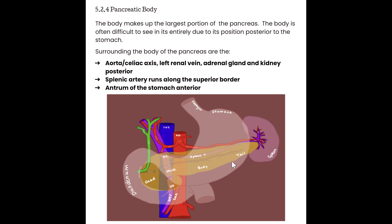Some other structures we'll see are the splenic artery running along the superior border of the body — it's a very tortuous vessel that runs on the superior side of the pancreas, coursing along the body, extending to the tail, and into the spleen. The antrum of the stomach is also going to be anterior to it. The fundus, body of the stomach, and then the antrum is the part right before the pylorus muscle, which connects into the duodenum.